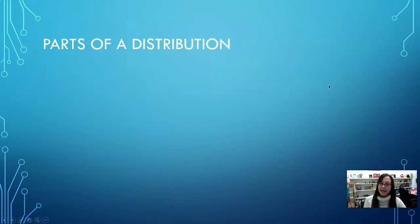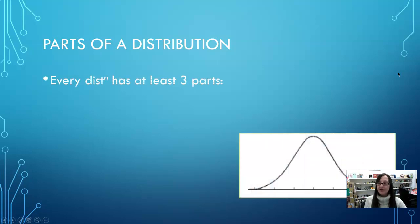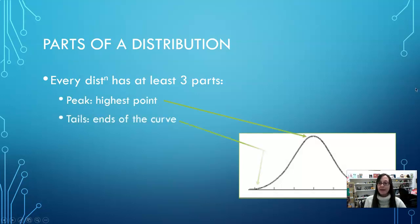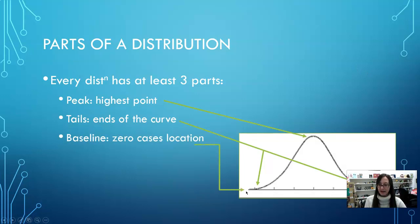Looking at any distribution — and we'll use the normal distribution as our guide — every distribution has at least three parts to it. It has the peak, which is the highest point in the curve. It has the tails, which are both ends of that curve. And it has the baseline, which is literally that horizontal line where when the curve hits that line, theoretically, that means there are zero cases at that point.